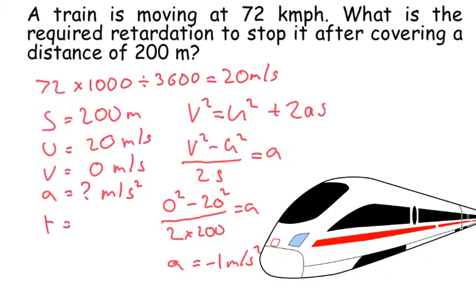Put the numbers in. 0 squared is still 0, minus 20 squared divided by 2 times 200, which is 400. You get an acceleration of minus 1 meter per second squared. So the required retardation is 1 meter per second squared.